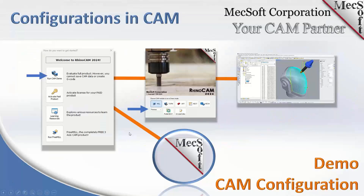If you want to look at each configuration, just unplug your computer from the internet and run Rhino or run our Visual CAD/CAM. Depending on the type of license you have, you should also release your license before you unplug from the internet. This prevents your product from acquiring a license. If it's a cloud license, release it first. If it's a node-locked license, you don't have to worry about it.